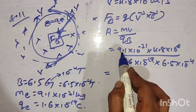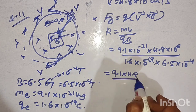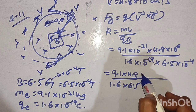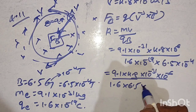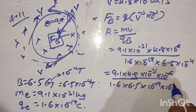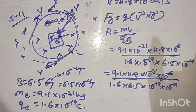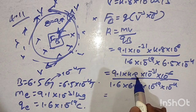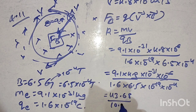R equals 9.1 x 4.8 divided by 1.6 x 6.5. Making the powers separate — that is 10 to the power of minus 31 into 10 to the power of minus 6 in the numerator, and 10 to the power of minus 19 into 10 to the power of minus 4 in the denominator. These powers are separated from the decimal values. 9.1 x 4.8 gives 43.68, divided by 1.6 x 6.5 which gives 10.4.